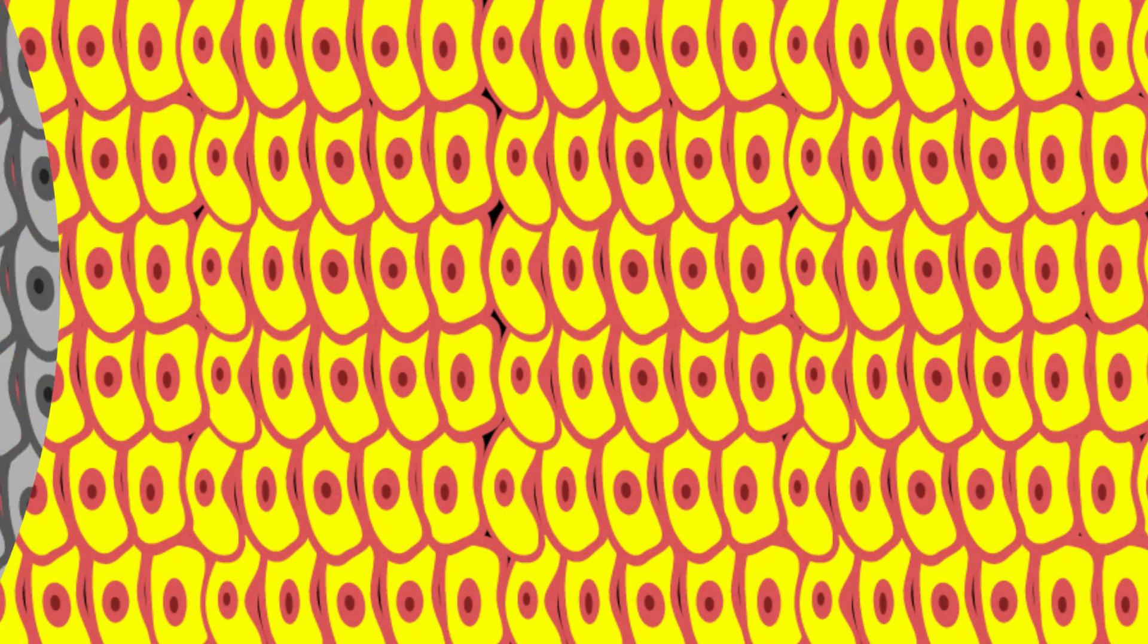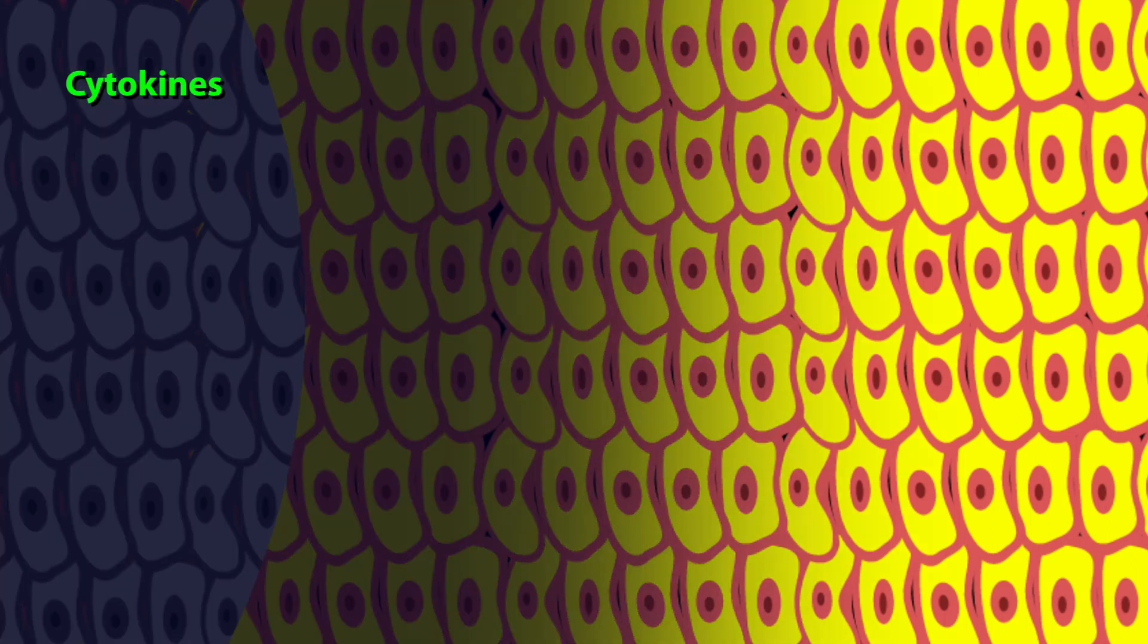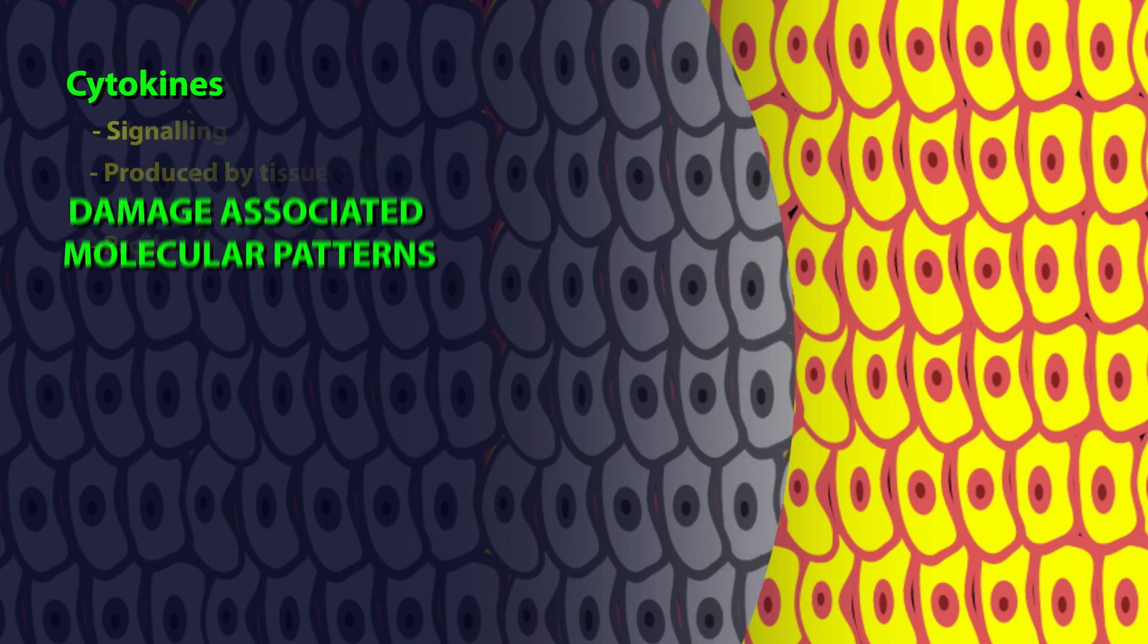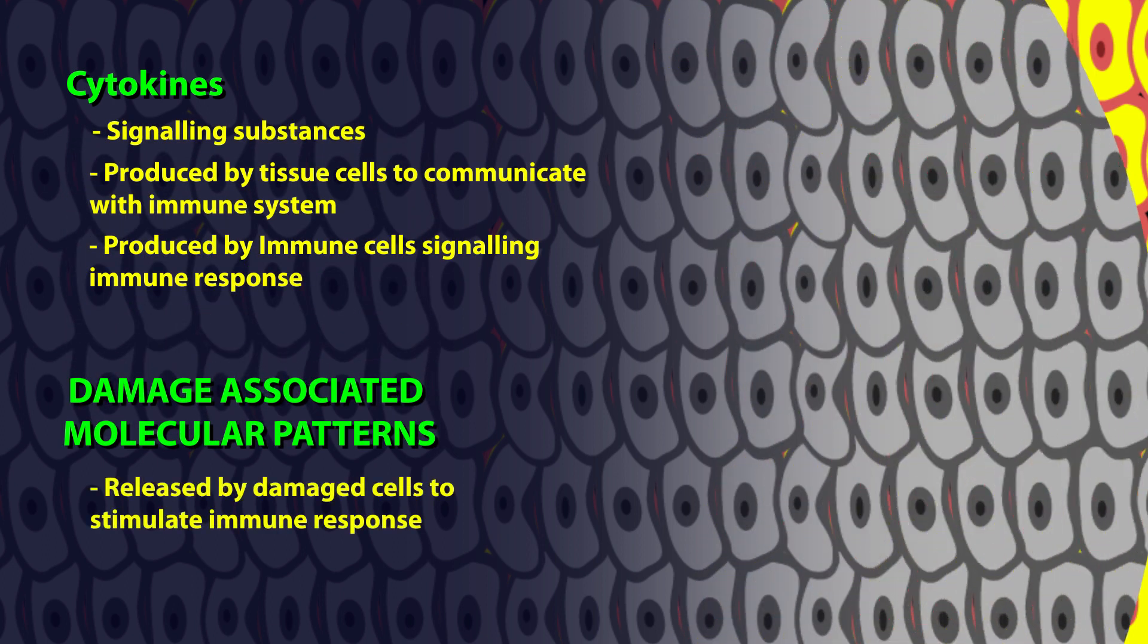As the infected cells die, they release proteins called cytokines and damage associated molecular patterns. Cytokines are like the messenger proteins which act as a signal to activate the immune system.